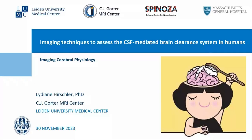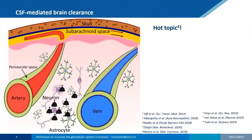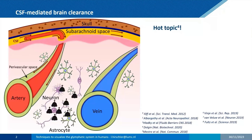The general idea is that CSF produced by the choroid plexus will enter along the arteries. Here you have a schematic representation of the brain with CSF on top, and the perivascular spaces in green around large vessels. CSF produced by the choroid plexus enters along the arteries and subsequently reaches the brain parenchyma by flowing along perivascular spaces.